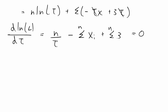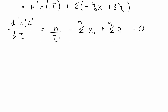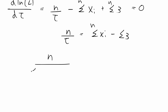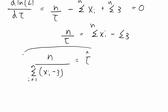We set that equal to zero and solve for tau. Moving the sum terms to the right-hand side gives n over tau equals the sum of x_i minus the sum of 3. Then multiplying by tau and dividing by the right-hand term gives n over the sum of x_i minus 3 equals tau. This is our maximum likelihood estimator for tau.